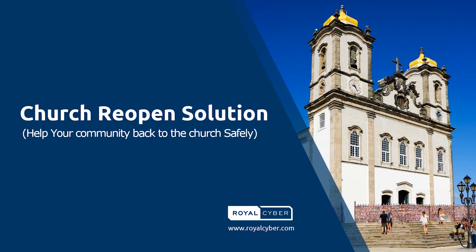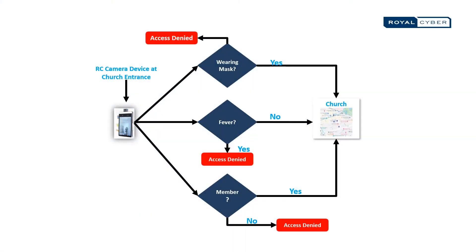In this video, I will demonstrate how the members of your church community can visit and attend the services with security and safety. In this example, you can see a person enter the church. But before he can enter, the thermal device checks for three things.